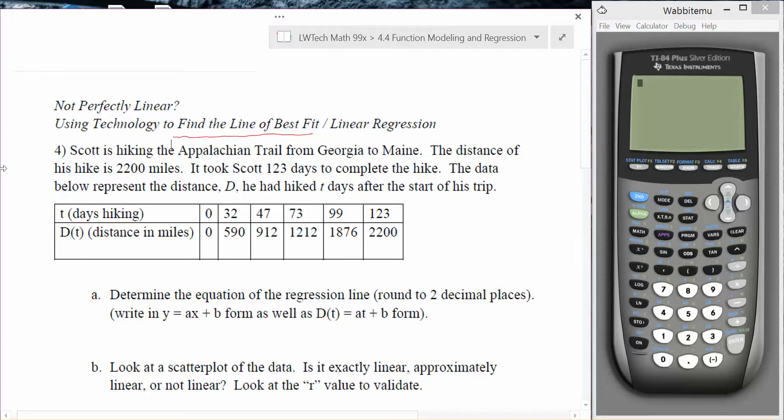If we have a data set like this one and we want to have the calculator find the equation of a line that works best here, the first thing we need to do is tell the calculator the data points. Because this is a statistical type of function, we use the stat button as our home base for these particular problems. The first button that you need to do is click on the edit button.